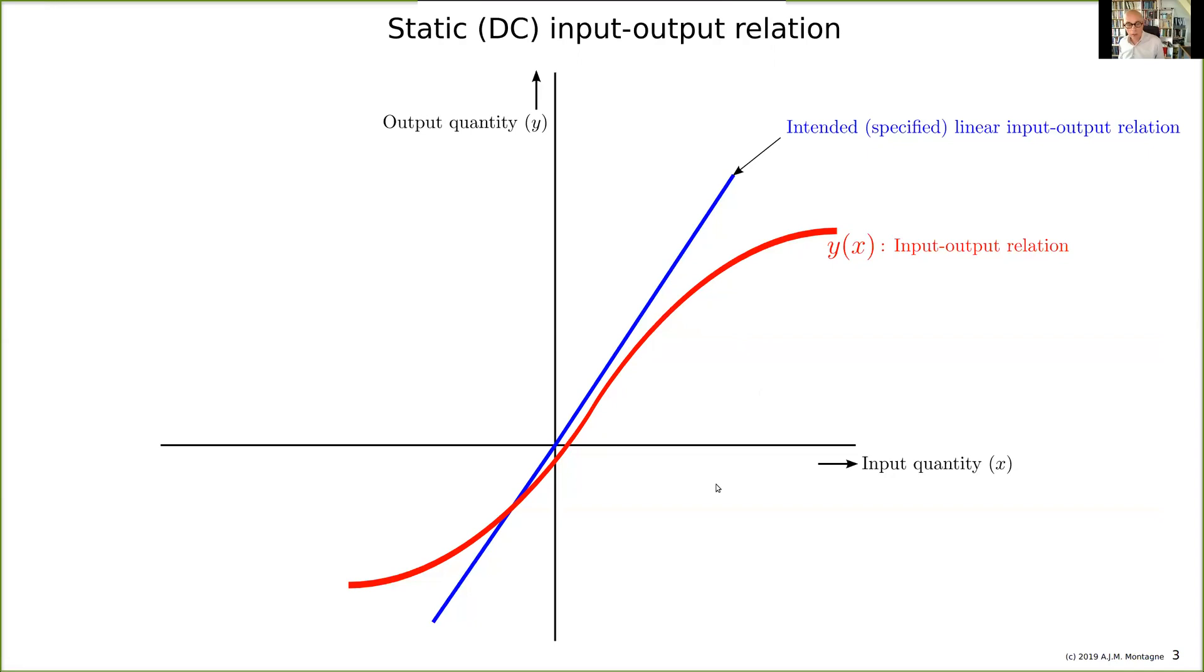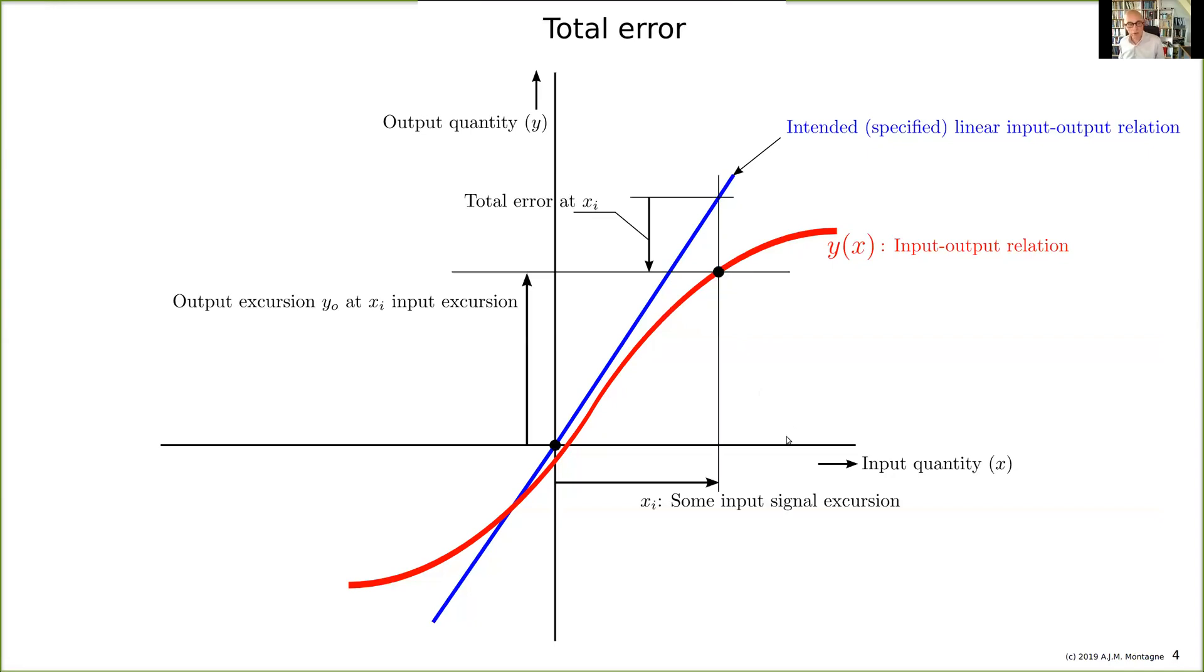Offset and gain are very interesting to model individually. And then the other, maybe we do something like summing it. Let's say you could speak of a total error. If you just built your amplifier, you wanted the blue one, you got the red one. Let's say for today we made not the best amplifier. Then at this point, at some input signal excursion, we have a total error as indicated in this figure—the total error at xi. The total error at any other signal is different.